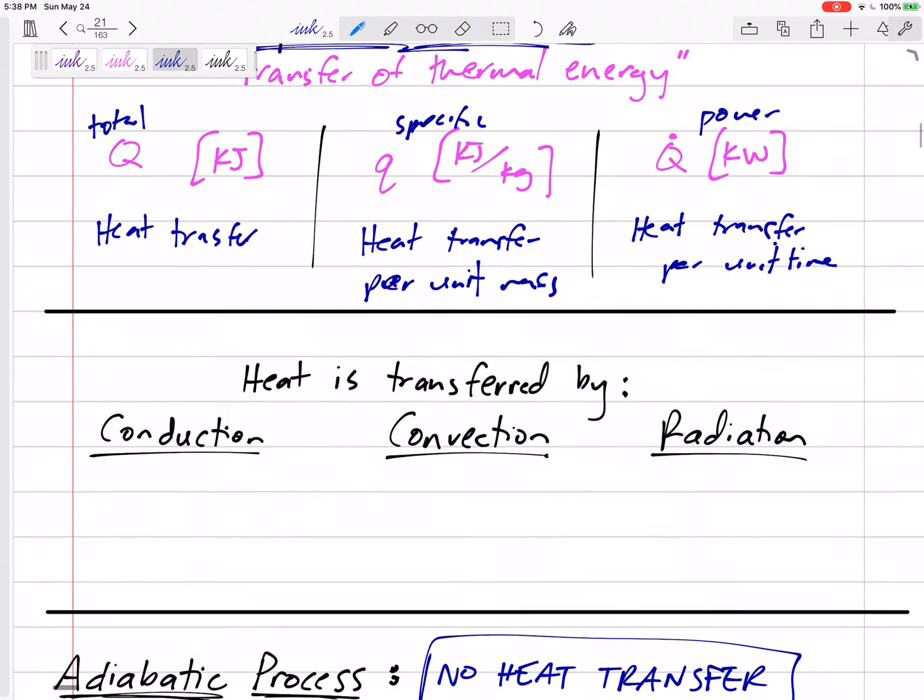All right, heat can be transferred by conduction, convection, radiation. You all have heard this before, right? Conduction is like physical touch, two things touching each other. Convection is fluid motion. And radiation is electromagnetic waves. So three different ways heat can be transferred.